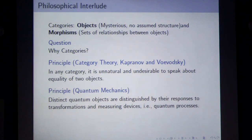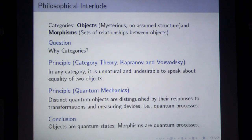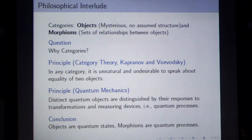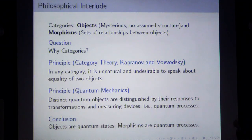Categories work especially well when talking about topological phases of matter where we don't care about geometry or dynamics. The objects — anyons — are like quantum states that are mysterious, and the quantum processes — braiding, particle exchange — are exactly the morphisms. Categories put quantum mechanics on solid ground. This is particularly apt for topological phases where only topology matters.